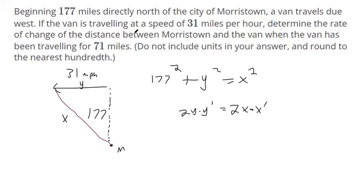But we do know a few things. We do know the van is traveling at a speed of 31 miles per hour. So this distance, this y prime, I should say, this speed is 31 miles per hour. So y prime is a positive 31. So we've got a number we can plug in for the rate of change of the y variable. What else do we have? They tell us that the van has been traveling for 71 miles. So it started exactly north. It went 71 miles this way. That's our y variable. We're at 71 miles.